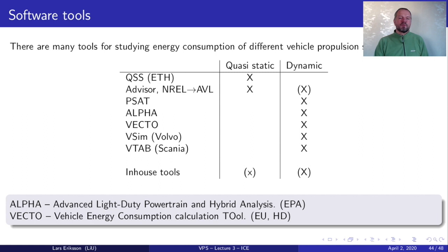We have PSAT, which is a tool from Argonne National Labs that is also developed to support analysis. Then we have ALFA and VECTO. ALFA is the advanced light duty powertrain and hybrid analysis tool that was developed by the Environmental Protection Agency in the US. VECTO is a vehicle energy consumption calculation tool that is used in the European Union with special focus on heavy duty vehicles. All manufacturers have their own in-house tools. For example, Volvo has a tool that's called VSIM for Volvo simulation and Scania has a tool that they call virtual truck and bus tool. These are also put in whether or not they are quasi-static. The QSS and advisor are both quasi-static while the advisor has also dynamic part where the maximum acceleration of a vehicle is evaluated in the forward part while quasi-static is used for the fuel consumption estimations. PSAT, ALFA, VECTO, VSIM and VTAB are all dynamic tools.